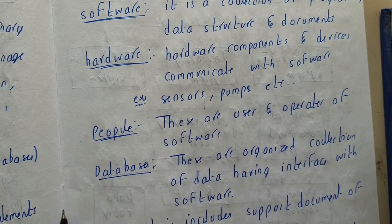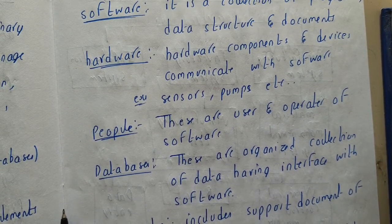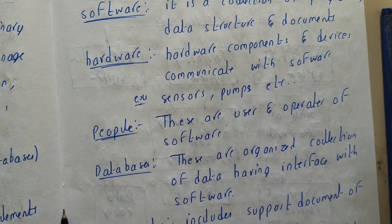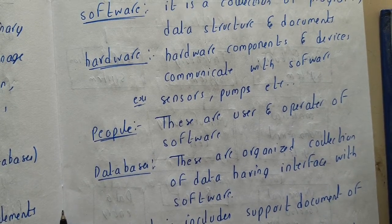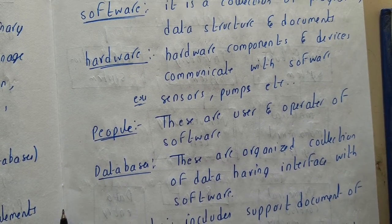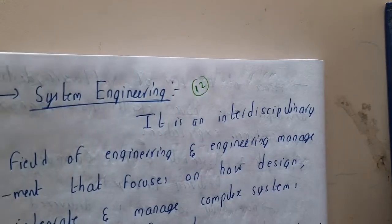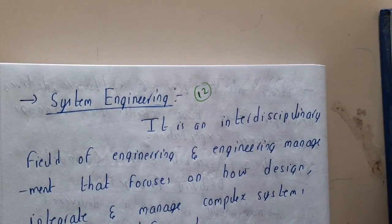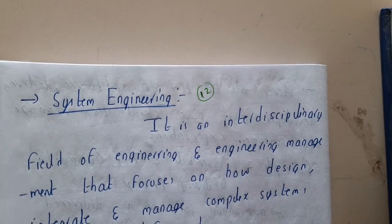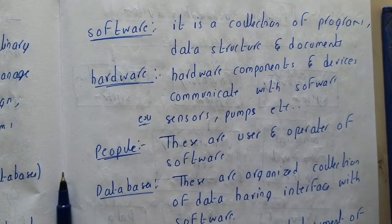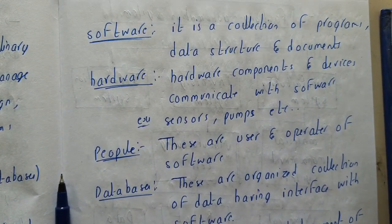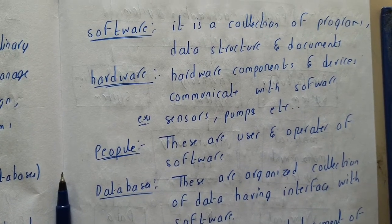For exam purposes, for principles just write the title of the principle and give two to three lines of explanation — that will be more than enough according to your marks. In the next lecture, we will be going through system engineering — how systems are engineered and what different methodologies they use. Let us meet in the next lecture, thank you for watching.